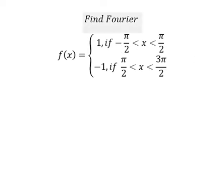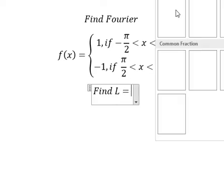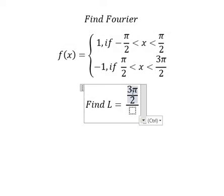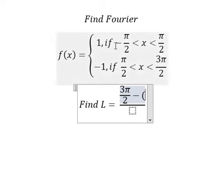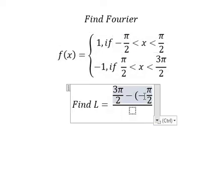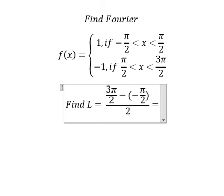The first thing we need to do, we need to find L. So in this situation we use 3B over 2 minus the lowest one, that is about negative B over 2. Then we divide by number 2. So we calculate this one and we have B.